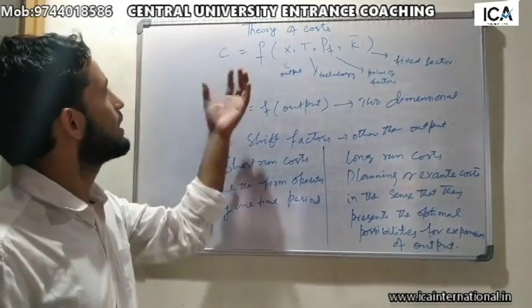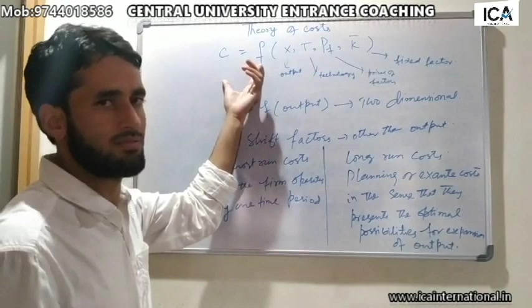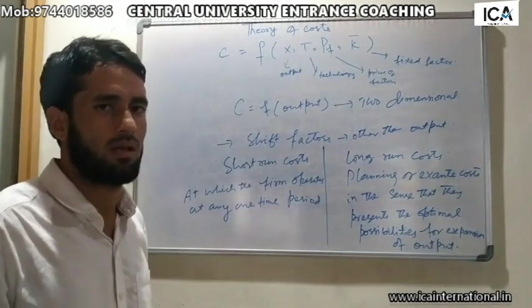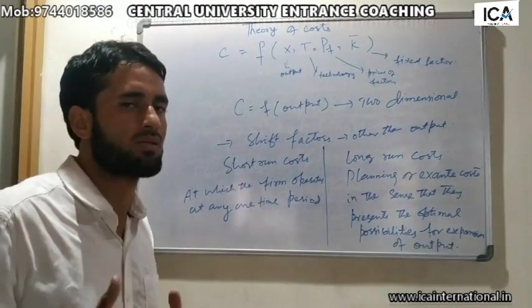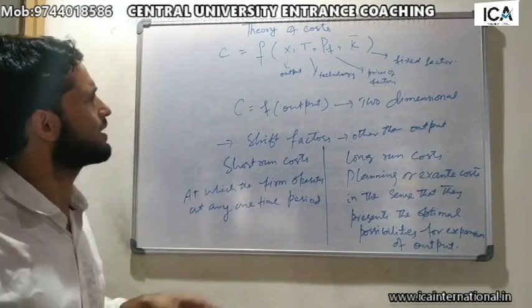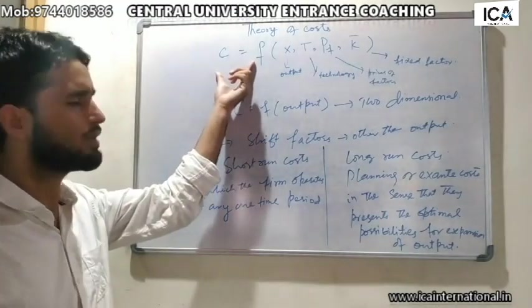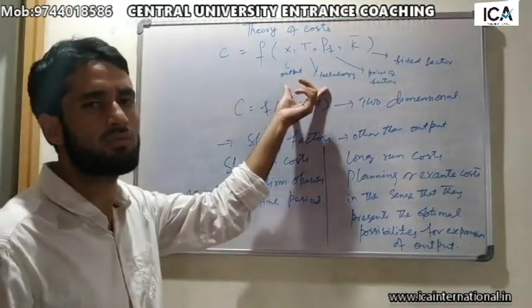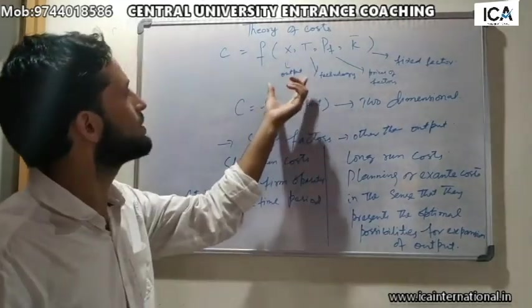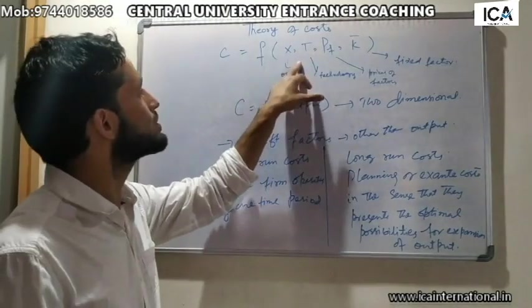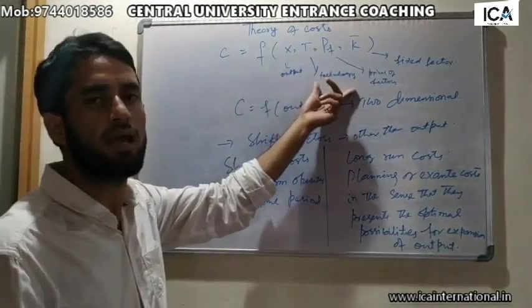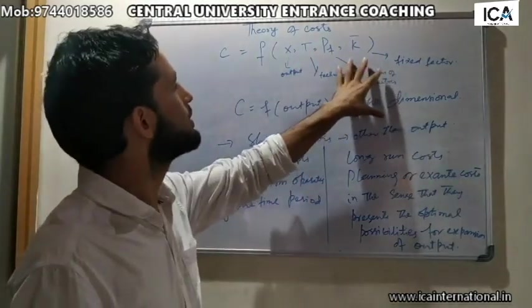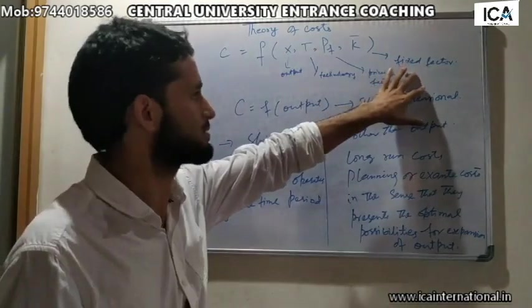If we see what cost actually means, cost is an expenditure that a producer incurs on production. Here if we see the cost function, cost is a function of different factors. The first one is output, then second one is technology, the third one is prices of factors, then prices of fixed factors of production.